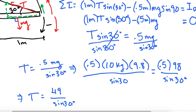So 49 divided by parentheses sine of 30, and that gives us 98. Let me double check I did that right.